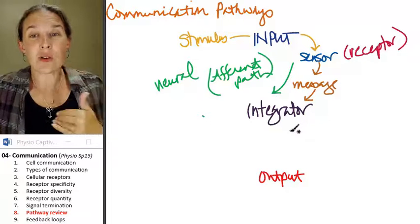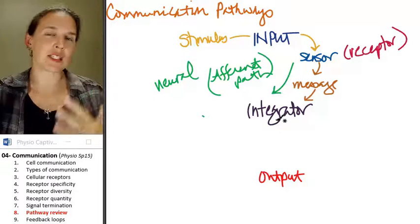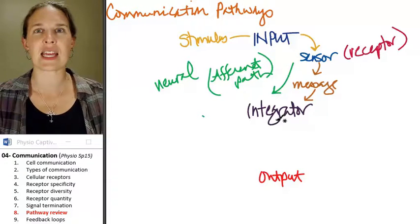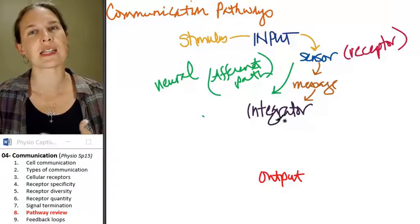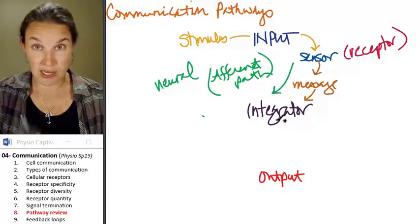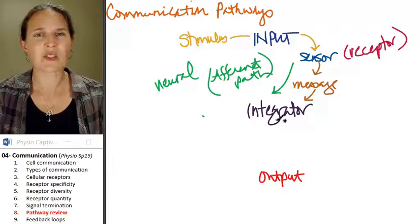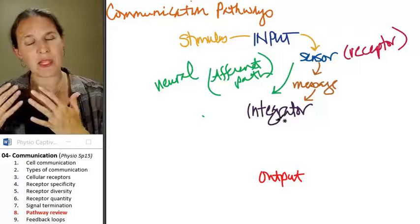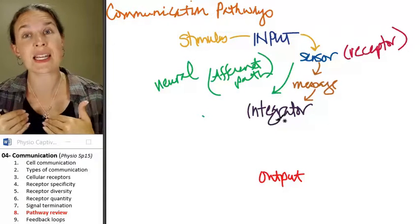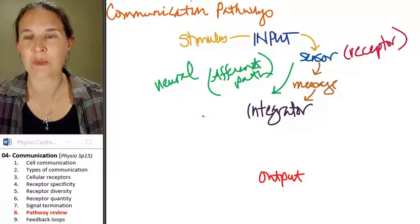And then the integrator does the processing. And the integrator is the piece that stays the most consistent. The terminology is the same. Integrator is an endocrine structure or the central nervous system. And it's where the afferent path comes, the afferent message comes in and the processing happens, and the integrator coordinates the output message.